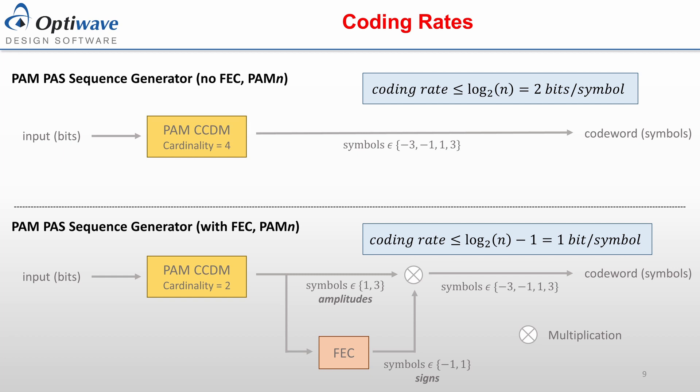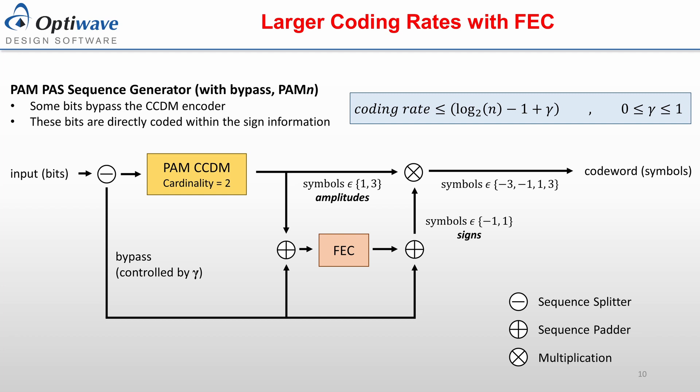The implementation of forward error correction affects the coding rate of the PAM-pass sequence generator. Without FEC, the maximum coding rate is log₂ of n, where n corresponds to the PAM format. With FEC, the maximum coding rate is log₂ of n minus 1, because none of the original input bits are encoded into the signs of the output sequence. A technique to reduce this limitation is to directly encode bits into the signs of the output sequence by taking a portion of the input bits and directly encoding them into the output signs; the FEC will still use these bits during the encoding procedure. The parameter gamma is introduced to control the fraction of bits directly encoded into the output signs, and can be varied between 0 and 1. Increasing the value of gamma increases the maximum coding rate available, but also decreases the amount of parity bits used during forward error correction, which lessens the error correcting ability of the system.